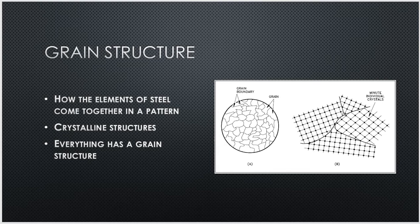A good example of a grain structure: think about the fabric your clothes are made out of — think of an individual string of cotton, that is a grain structure for your clothing. Think of sliced bread. When you pull a slice of bread from a loaf and look inside, you see all the different strands and fibers — that is the grain structure. Just about everything has a grain structure; it just looks a little different. Some are more obvious, some are a little harder to see.